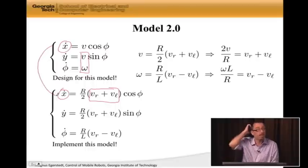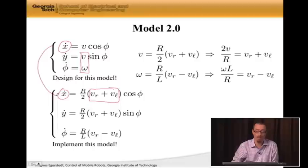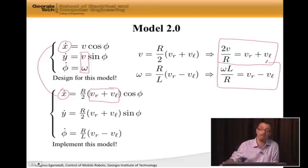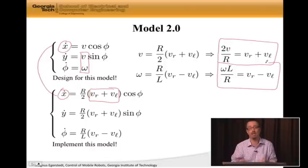We actually get that the velocity V is simply R over two, V sub R plus V sub L, or two V over R is V R plus V L. So this is an equation that connects V, which is the translational velocity or the speed, to these wheel velocities. And we do the same thing for omega. We get this equation. So omega L over R is V R minus V L.